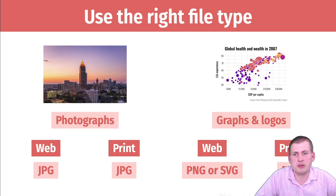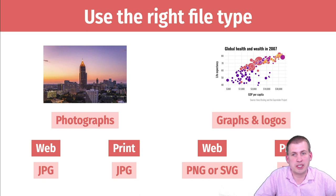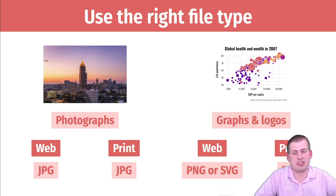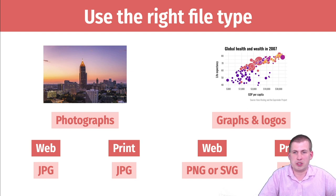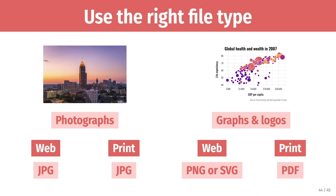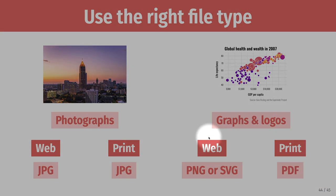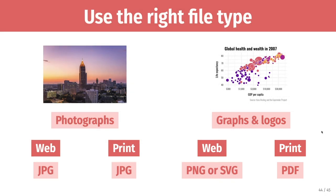In general, you want to use the right file type for the image you have. In the interactive lesson for today, there's a section where it shows you different images and asks what you should save it as. The easiest way to remember this: photographs are JPEGs. If you have anything with a graph, logo, or something with minimal colors, you want to save it as PNG or PDF — PNG if it's going on the Internet or into Word, or PDF if you're going to print it and use it in print design.